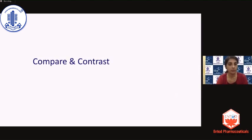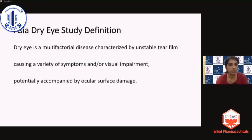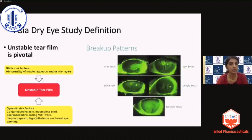When you have a definition and classification system, there will always be another group that comes out with a different definition or classification for comparison. One significant group with a slightly different viewpoint is the Asia Dry Eye Society, which defines dry eye slightly differently — stating that it is the unstable tear film which is pivotal, unlike hyperosmolarity as proposed by TFOS.